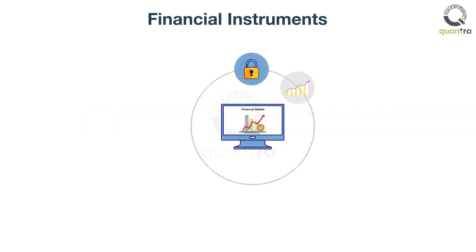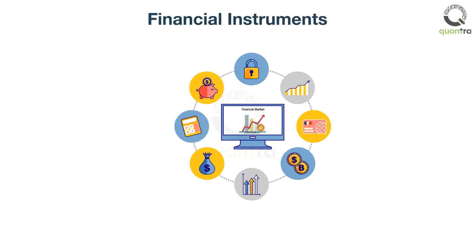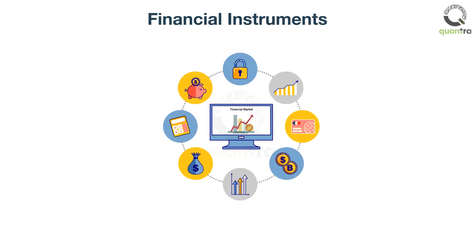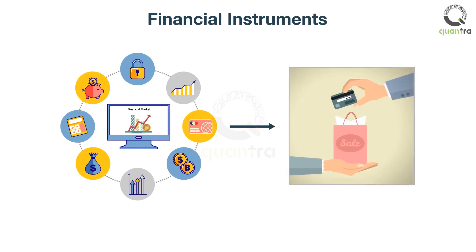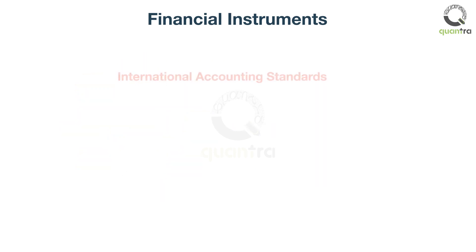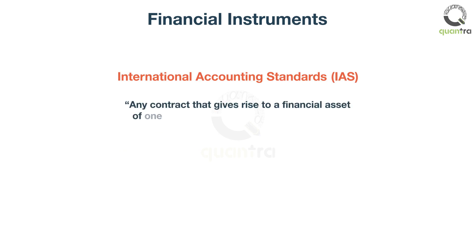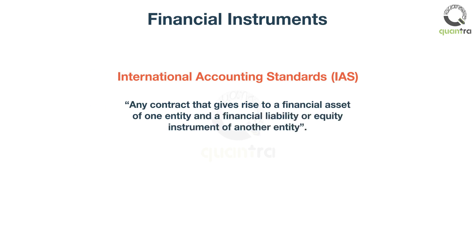Many financial instruments get traded on the financial markets. At its core, such instruments are legal agreements between two consenting parties. One party pays cash, or something of value, in exchange for the rights to some claims — for example, ownership in a firm. International Accounting Standards defines financial instruments as any contract that gives rise to a financial asset of one entity, and a financial liability or equity instrument of another entity.